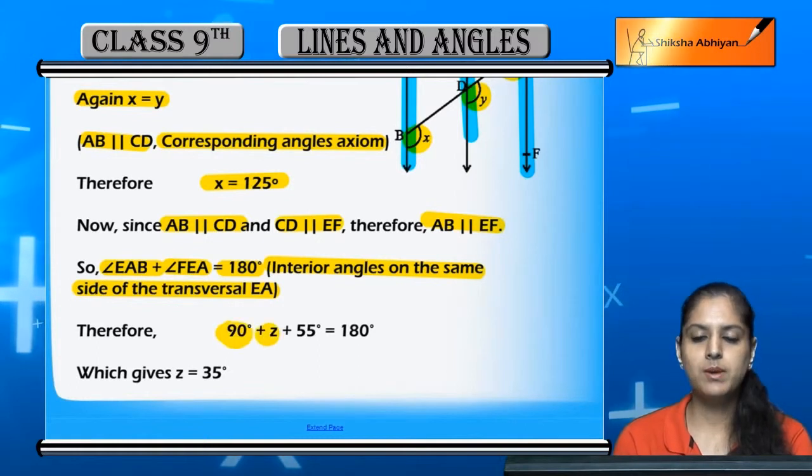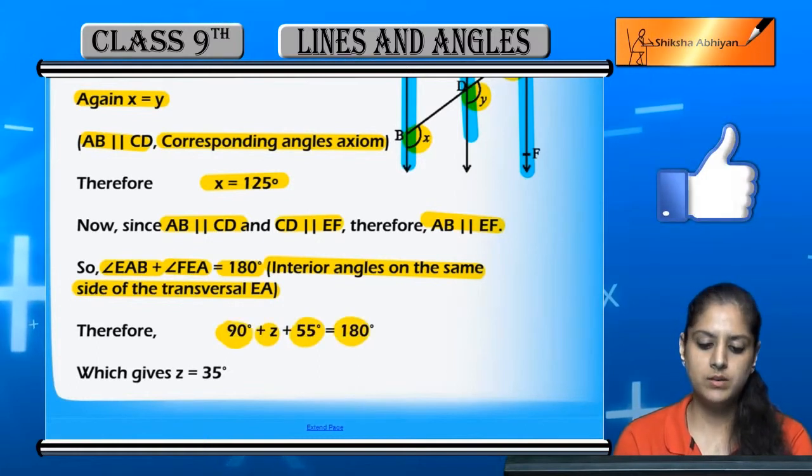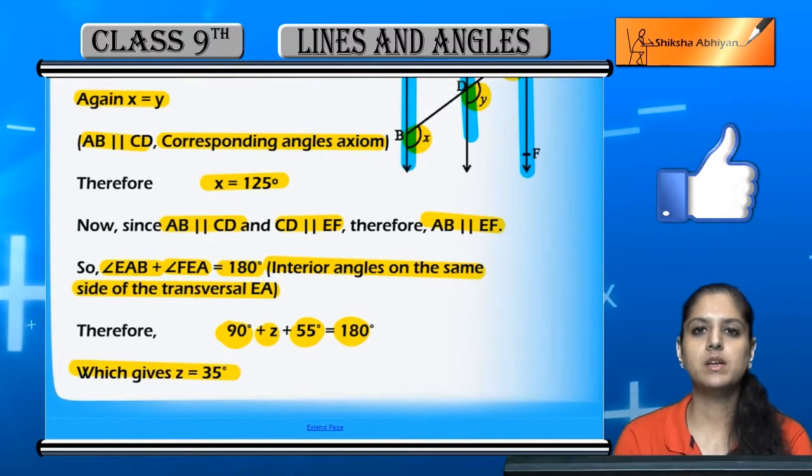Therefore, 90 plus z plus 55 equals 180, which gives z equals 35 degrees.